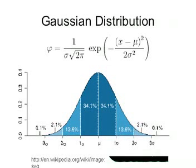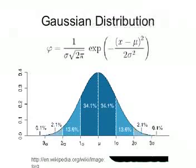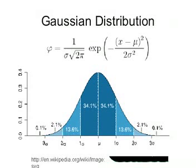Gaussian distribution, also known as normal distribution, represents a probability frequency distribution for a random variable that theoretically takes on a bell-shaped curve symmetrical about the mean. The percentage of your data that falls within the standard deviations is shown in the curve. If you can fit 4.5 standard deviations within your process specifications, then you have obtained a Six Sigma process.